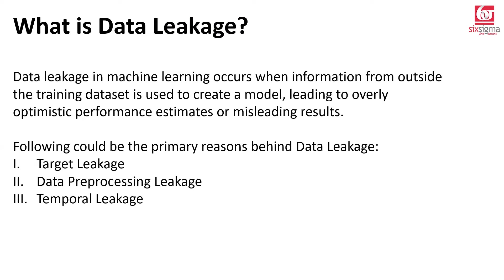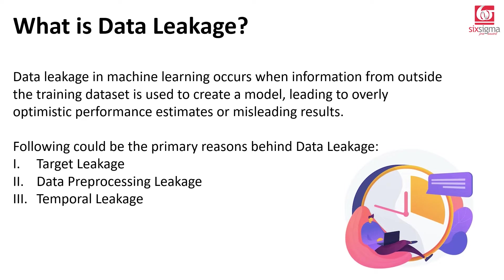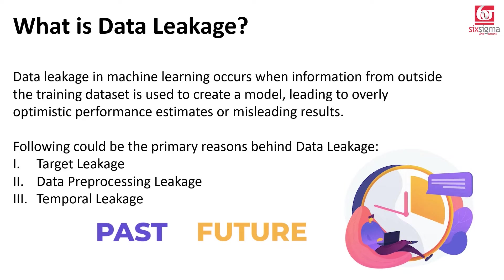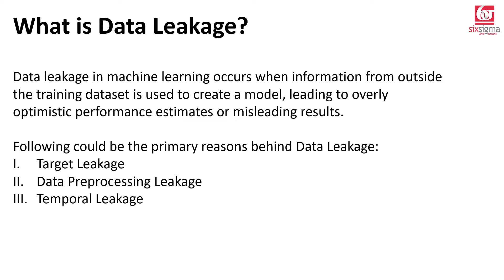The primary reasons behind data leakage are: first, target leakage; second, data preprocessing leakage, where we'll spend most of our time; and third, temporal leakage. We can dismiss temporal leakage right away because it relates to time-sequence data. If you're dealing with data where order of occurrence matters, using future information to estimate the past is called temporal leakage. The whole idea of forecasting is that you know the past and are trying to estimate the future, not the other way around.